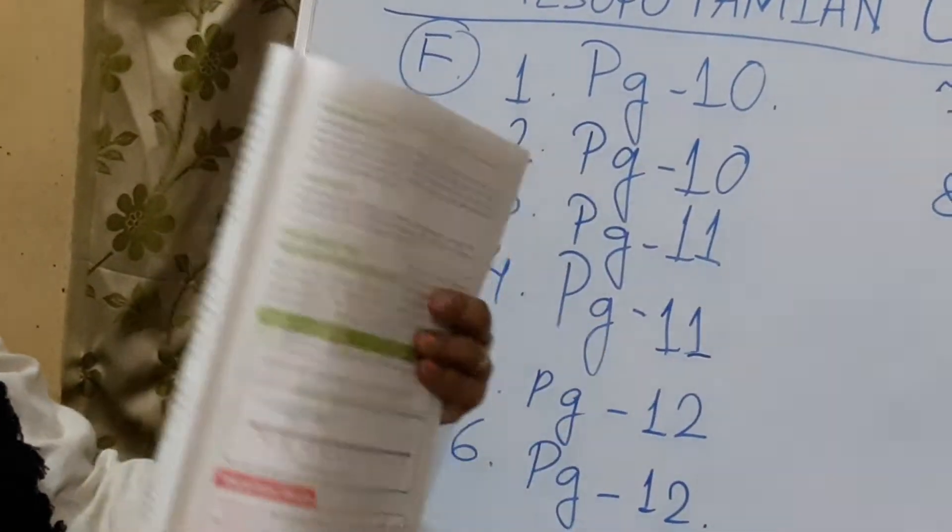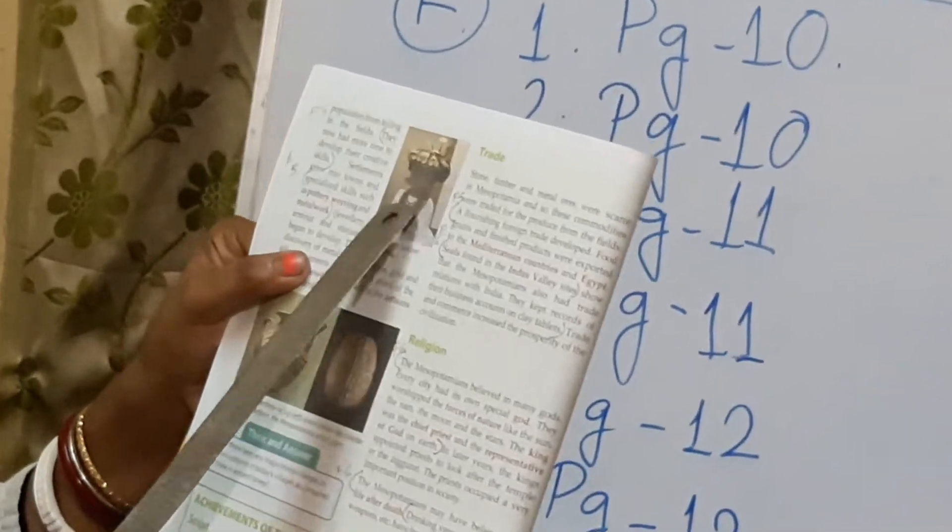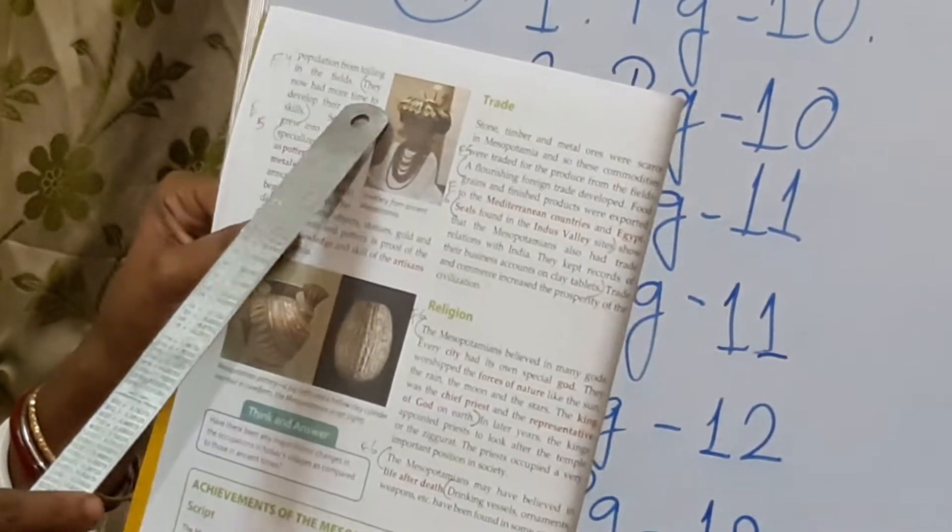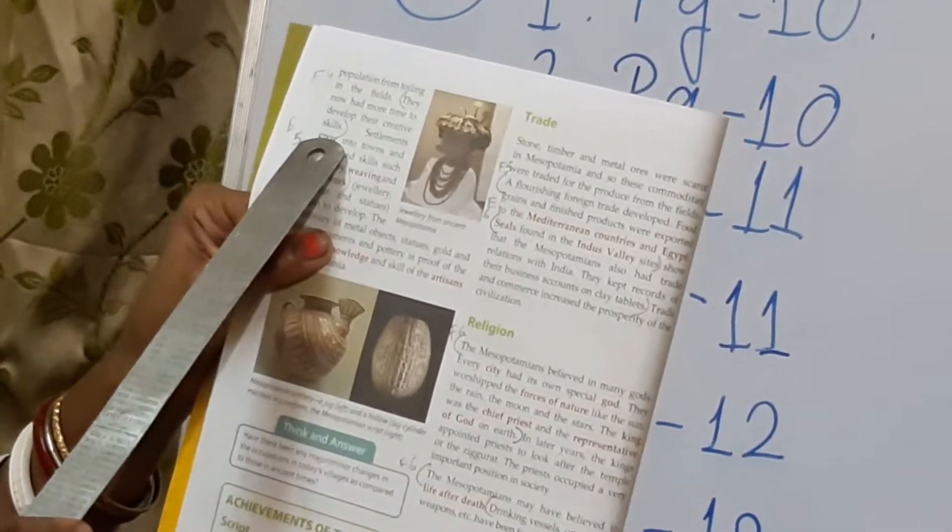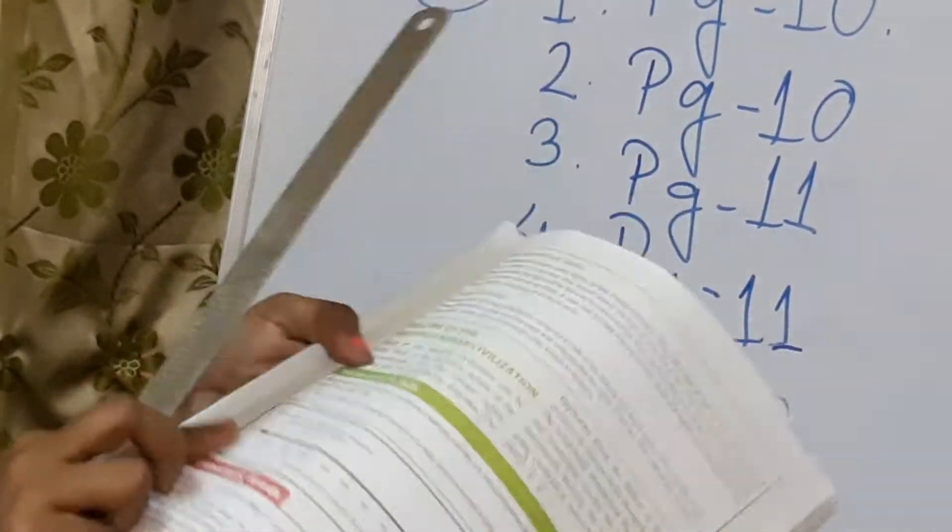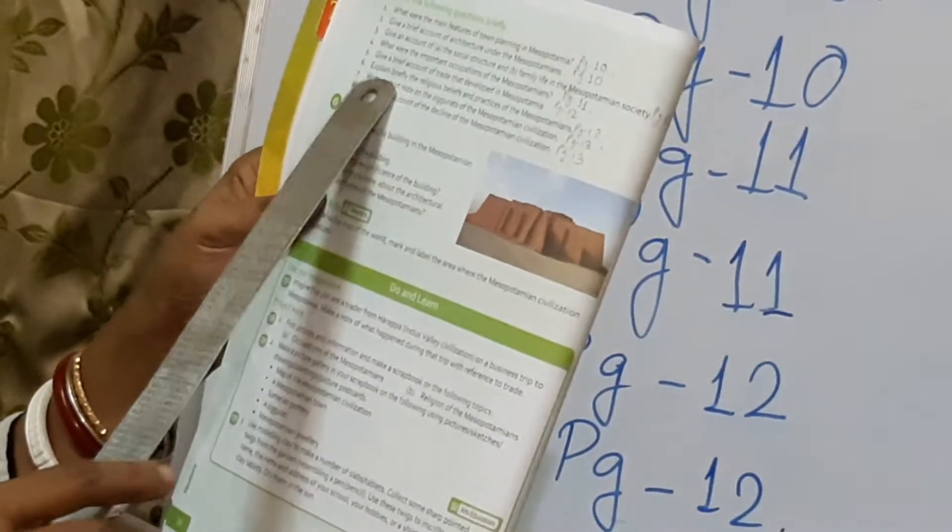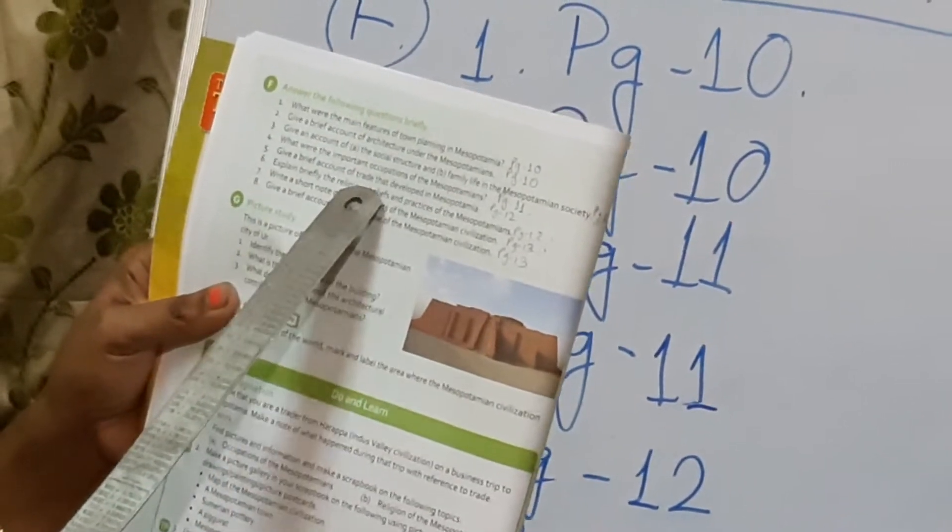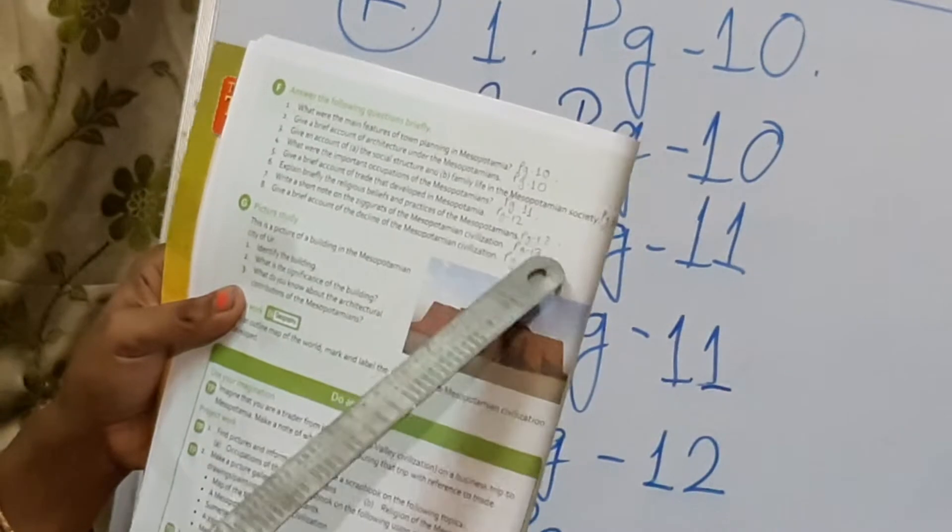From there you can write another point. Please take out page number 12. In this occupation part you can add this line that is page number 12. They now had more time to develop their creative skills. This one you can add it with that. Now see question number 5. Give a brief account of trade that developed in Mesopotamia. It is in page number 12. Brief account of trade it is asked.